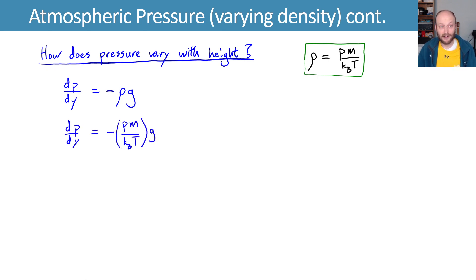We get dp/dy is equal to negative pm over kᵦT times gravity. And now we can try and integrate this. To do so, we have to move all of the pressures over with the dp, and anything that has y over with the dy, but nothing has y here. So we'll divide p on both sides and multiply both sides by dy to get 1 over p dp is equal to negative mg over kᵦT dy.